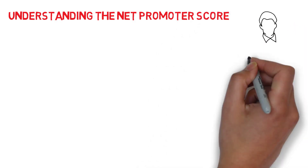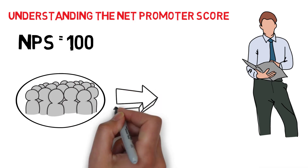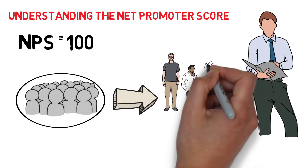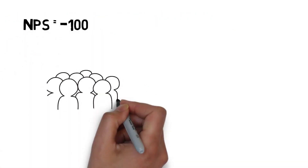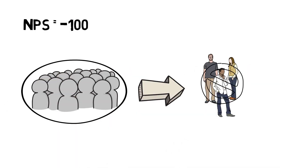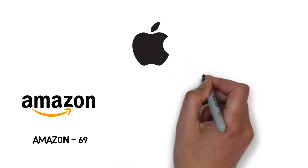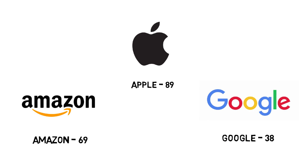The next part is Understanding the Net Promoter Score. The optimal NPS would be 100, with every single one of your customers saying that they would recommend you to a friend. NPS would be minus 100 being the worst possible score, where none would recommend you to a friend. To put into perspective what sort of NPS your favorite companies are earning, here's a quick snapshot: Apple 89, Amazon 69, Google 38.